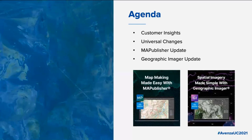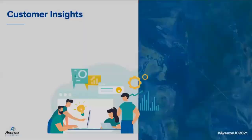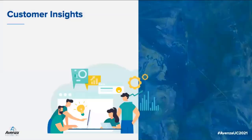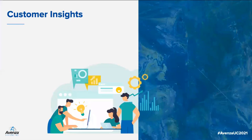I'm going to talk to you about some of the customer insights we get, which helps us make our decisions, some universal changes we've made to both Map Publisher and Geographic Imager, and what's upcoming in that area, as well as specific updates for both Map Publisher and GI. Before I get into all the cool improvements, I wanted to make sure you have full visibility on the great insights we get on how our applications are being used and how our key connections continuously help us drive our roadmap.